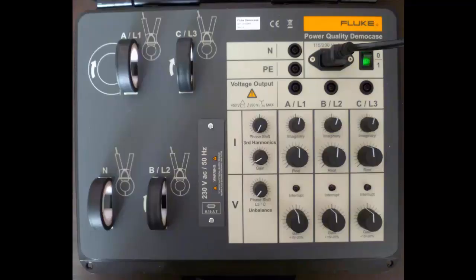Above the knobs which change the magnitude, which we call real, we have the imaginary component. This allows us to change the angular relationship between the current and voltage, so that when we look at the phasor diagram we can create phasor diagrams that look like real situations.